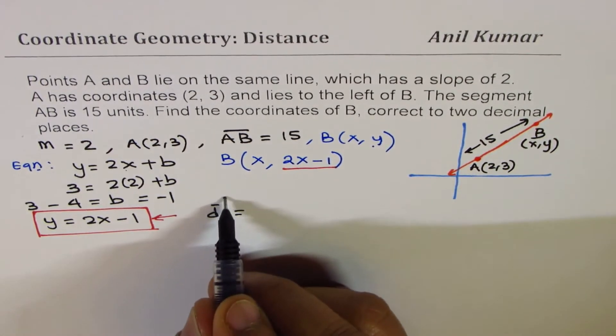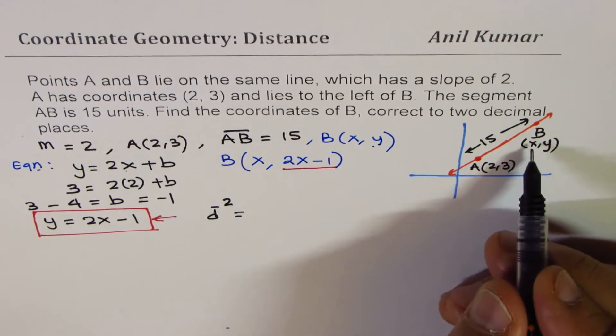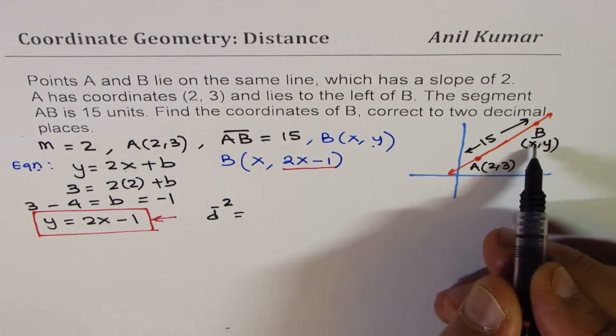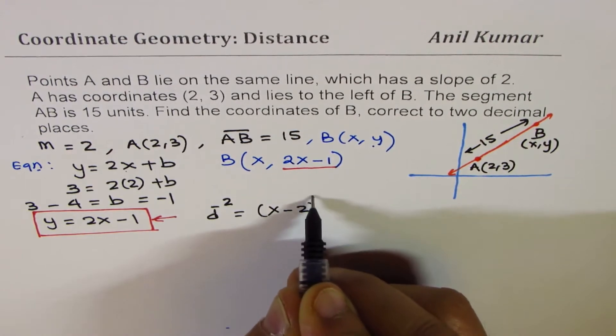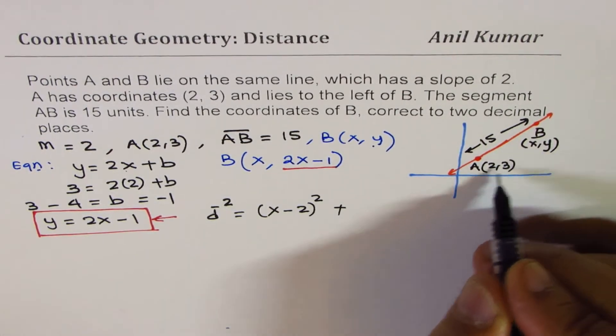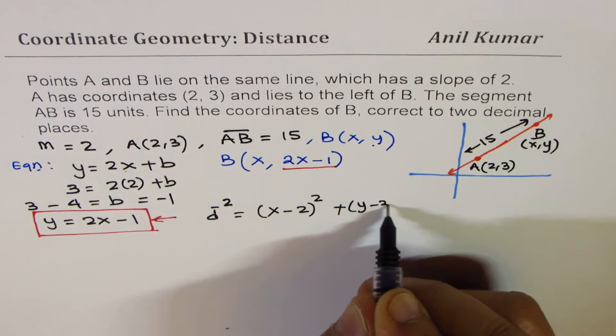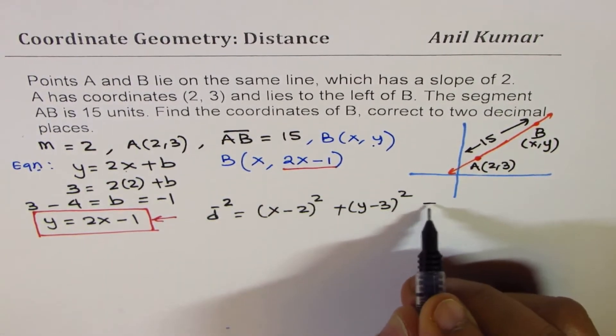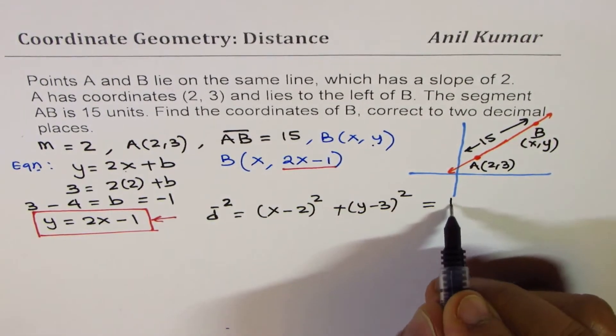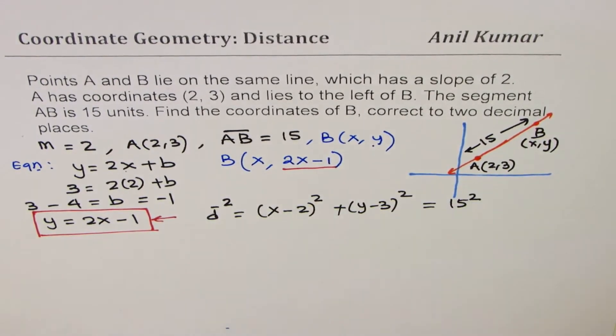is (x₂ - x₁)², right? So, basically, it is (x - 2)² + (y - 3)² equals distance squared, which is given to us as 15. So, it equals 15². Does it make sense?